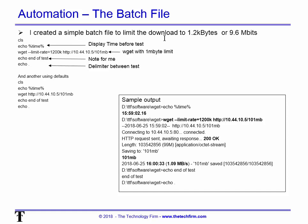I created a simple batch file that will limit the download to 1.2 kilobytes — or 9.6 megabits — and another one that simply does a download using defaults, so kind of full speed. The server is gigabit, the client is gigabit — they have no way of knowing the middle link is 10 meg or 3 meg or 50 meg. The batch file syntax is simple: CLS to clear the screen, echo percent time percent to display the time, then wget to get the file, echo end of test, and echo period — just to add spacing so the output looks obvious.